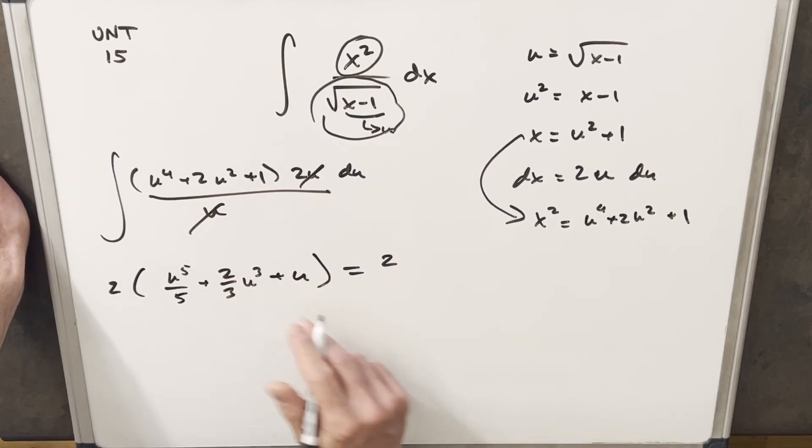Before I back substitute, I think what I'm going to do is let's factor out a u, because we notice we have a u in all these terms. That could help us out. And then also, maybe just to get rid of these fractions, I can factor out a common denominator, 15 here.